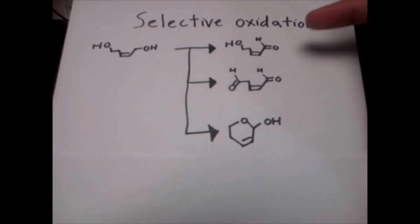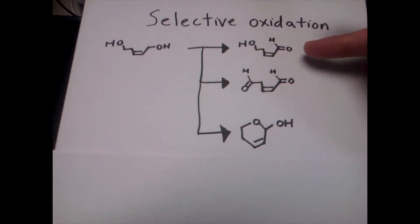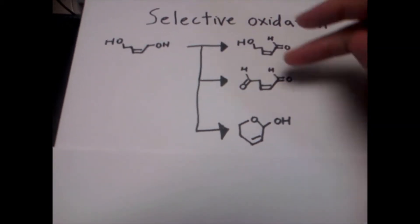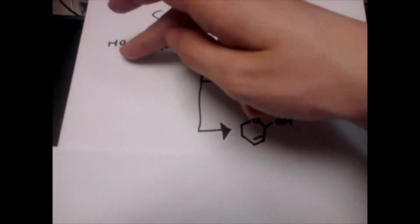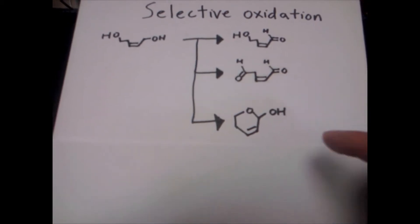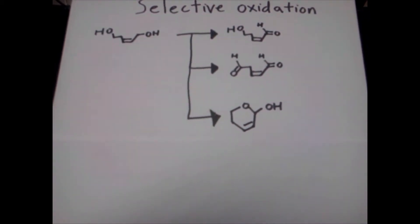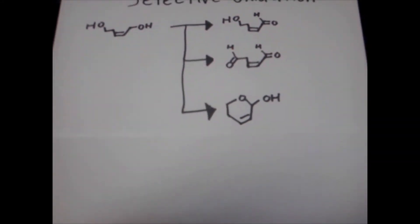In these three products, we see that our first one has the allylic primary alcohol oxidized into an aldehyde. In our second one, we have both the non-allylic and the allylic primary alcohol oxidized into aldehydes. In the third one, we form a lactol, which is a fancy word for a cyclic hemiacetal.